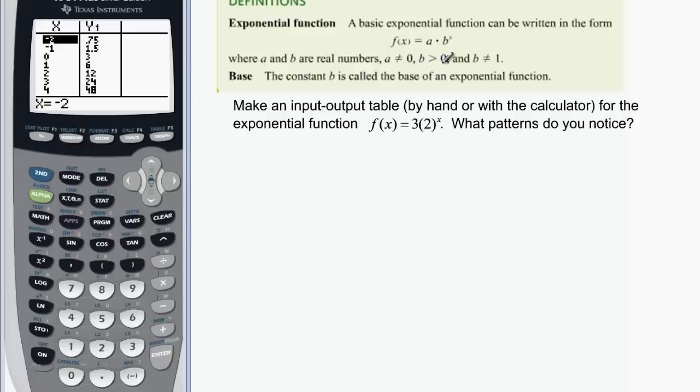And b has to be greater than zero, and it can't be equal to one. So we want to look at this f of x is equal to three times two to the x. And over here on my calculator, I actually have put that in, and I'm looking at the table. We want to look for some patterns.